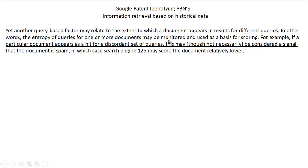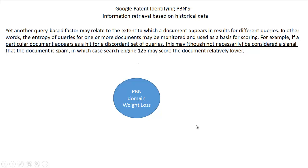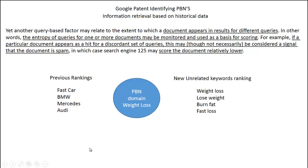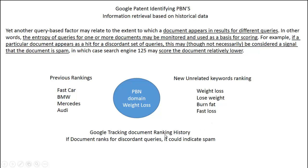Another issue: if a document appears as a hit for a discordant set of queries, this may be considered a signal that the document is spam. Google may monitor a document for certain keywords to see how it's performing. If a particular document suddenly appears for different keywords, this may indicate spam. For example, a private blog domain that was about fast cars and now ranks for fast cars, BMWs, Mercedes, and Audi, but then starts ranking for discordant keywords like weight loss, 'lose weight,' and 'burn fat' — Google tracking that document's ranking history could flag this as potential spam.